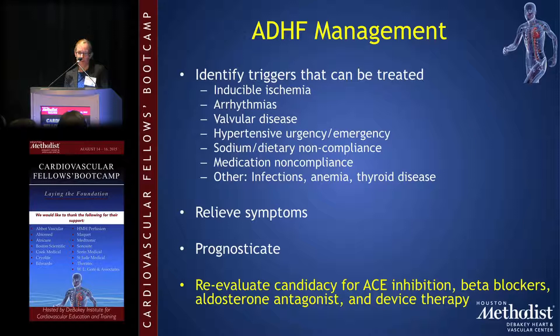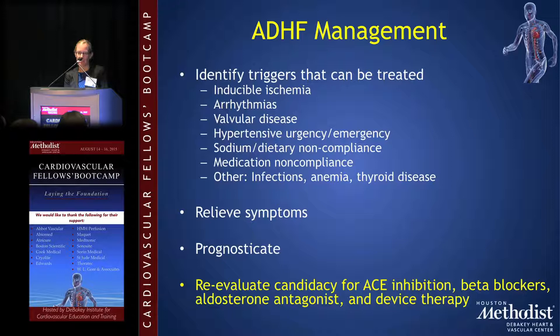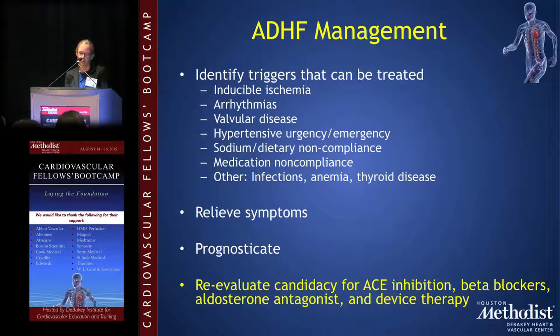Management focuses on four main points. First, identify the triggers — new ischemia, arrhythmias, worsening valvular disease, uncontrolled hypertension, dietary or medication noncompliance, or less common causes like significant anemia or thyroid disease. Second, relieve symptoms, mostly through volume optimization. Third, prognosticate the patient after acute decompensation to determine the next best step. And at every step, assess candidacy for goal-directed medical therapy: ACE inhibitors, ARBs, beta blockers, aldosterone antagonists, and device therapy such as ICDs or CRT.